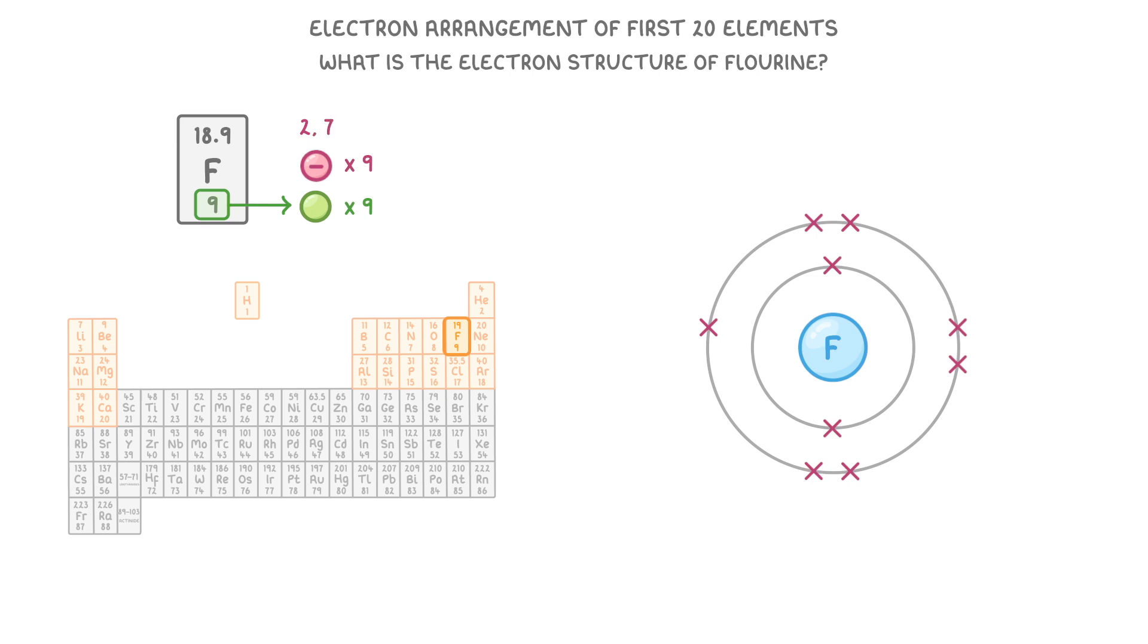So here, we'd have the opposite problem to what we had with calcium. In order to be stable and have a full outer shell, fluorine needs to gain one more electron, which it would have to get from another atom, giving it an overall charge of minus 1 and making it a 1 minus fluoride ion. And we could write this electron structure as 2, 8.